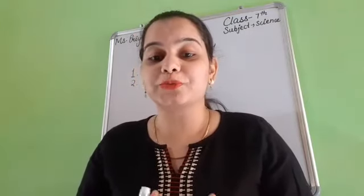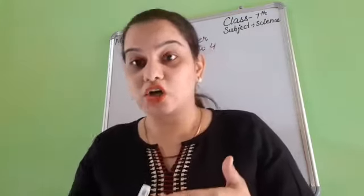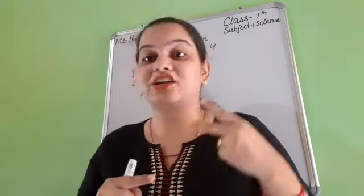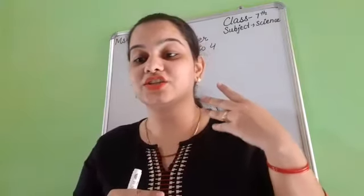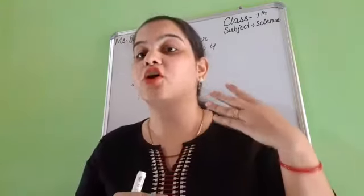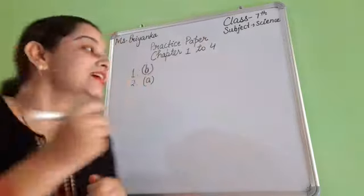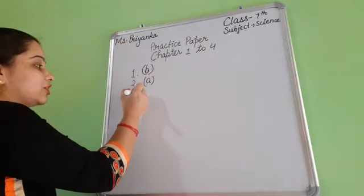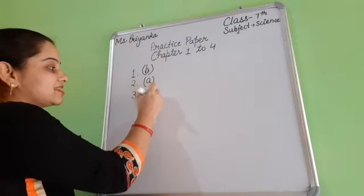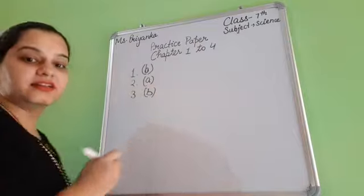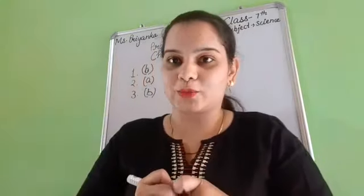Starch is the correct answer. Now for the next question, the options are: first option is cotton, second option is silk, third option is jute, and fourth option is nylon. Which one is correct? Yes, second option is correct. That is silk. Silk is the correct option.